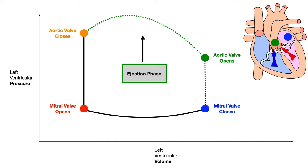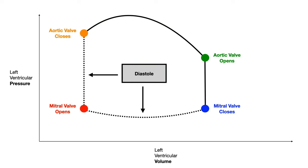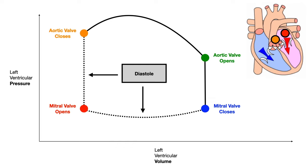So starting from the blue point where the mitral valve closes, you're starting systole; you go up to the aortic valve opening at green, then do the ejection phase going to the aortic valve closing at orange. Now let's talk about diastole. Diastole begins at the orange point when the aortic valve closes, includes the mitral valve opening at the red point, and goes to the blue point where the mitral valve closes again.